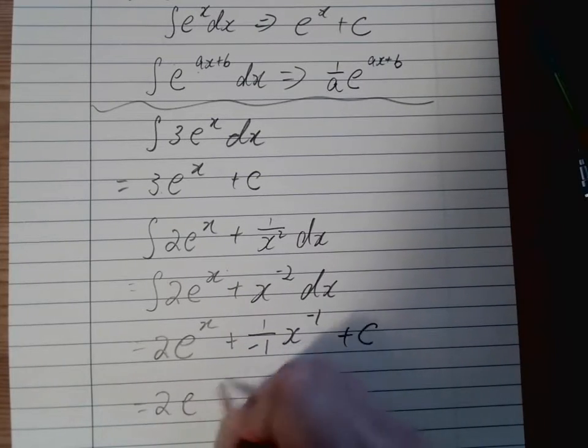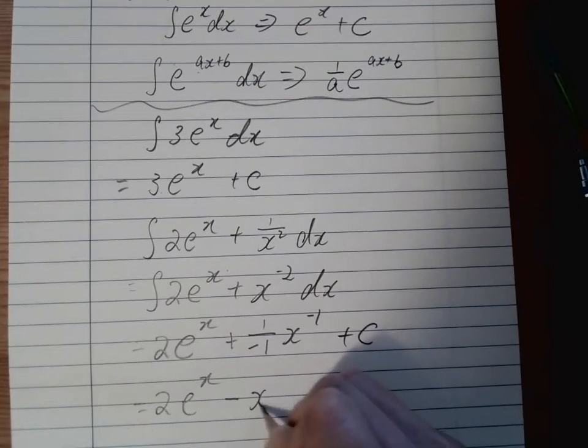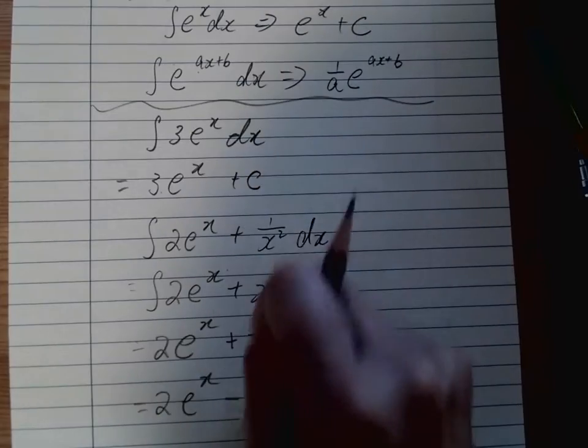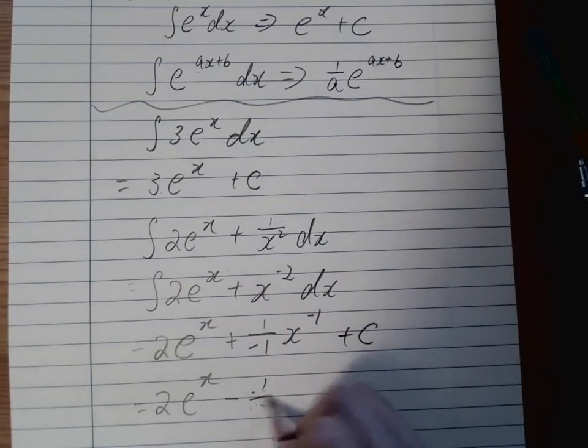Make sure you have the plus c. And then make it nicer. Even nicer. 2e^x minus 1 over x plus c.